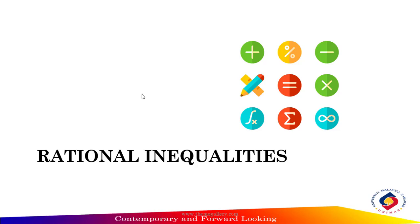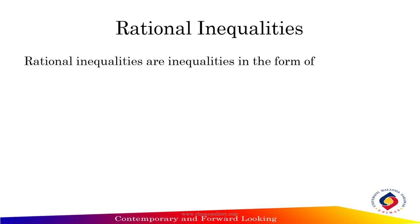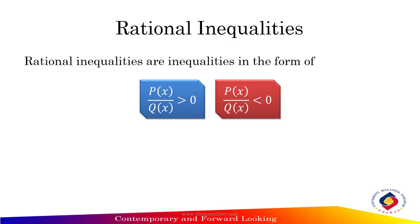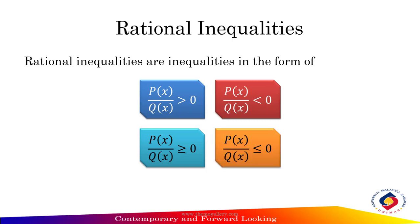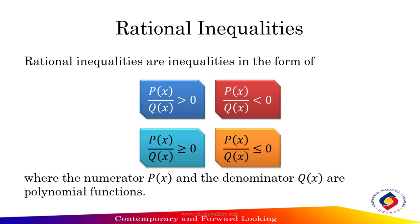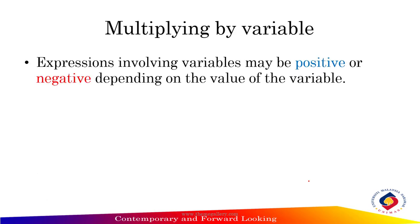Rational inequalities are inequalities in the form of P(x) divided by Q(x) greater than zero, less than zero, greater than or equal to zero, or less than or equal to zero, where the numerator P(x) and the denominator Q(x) are polynomial functions.